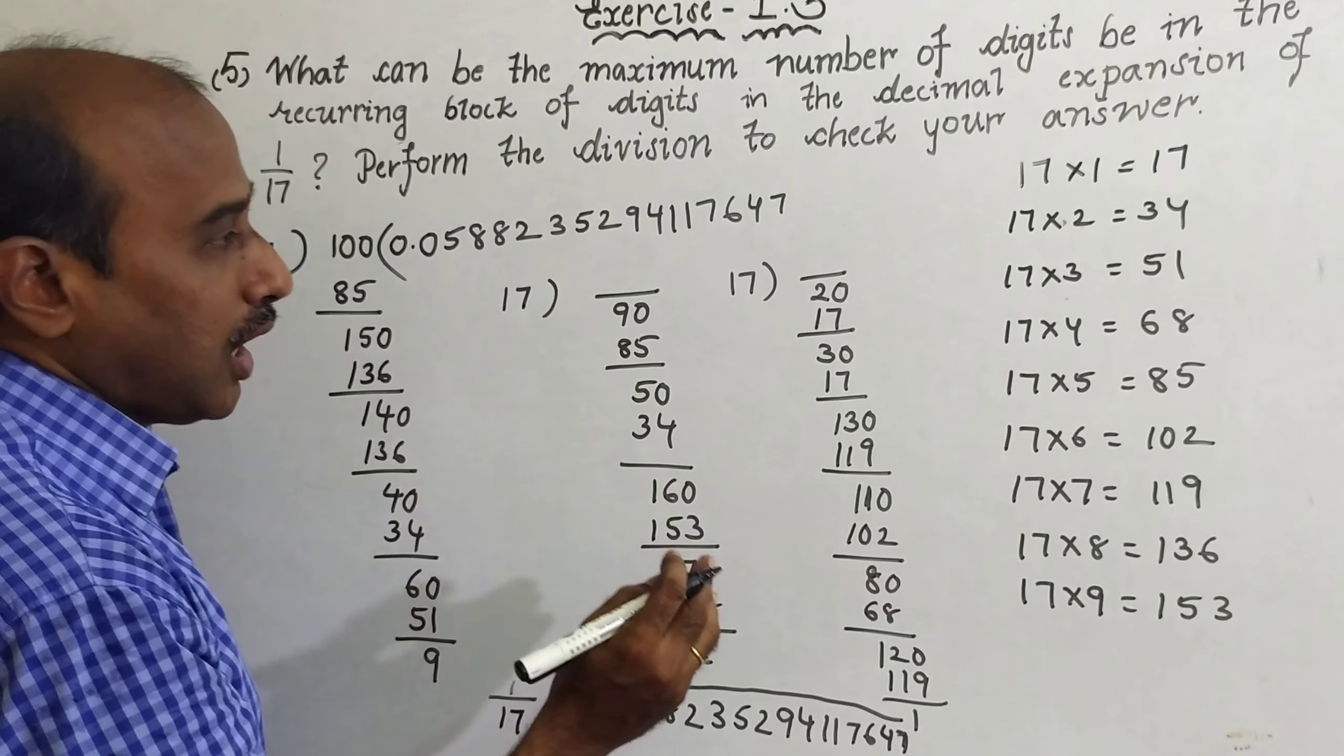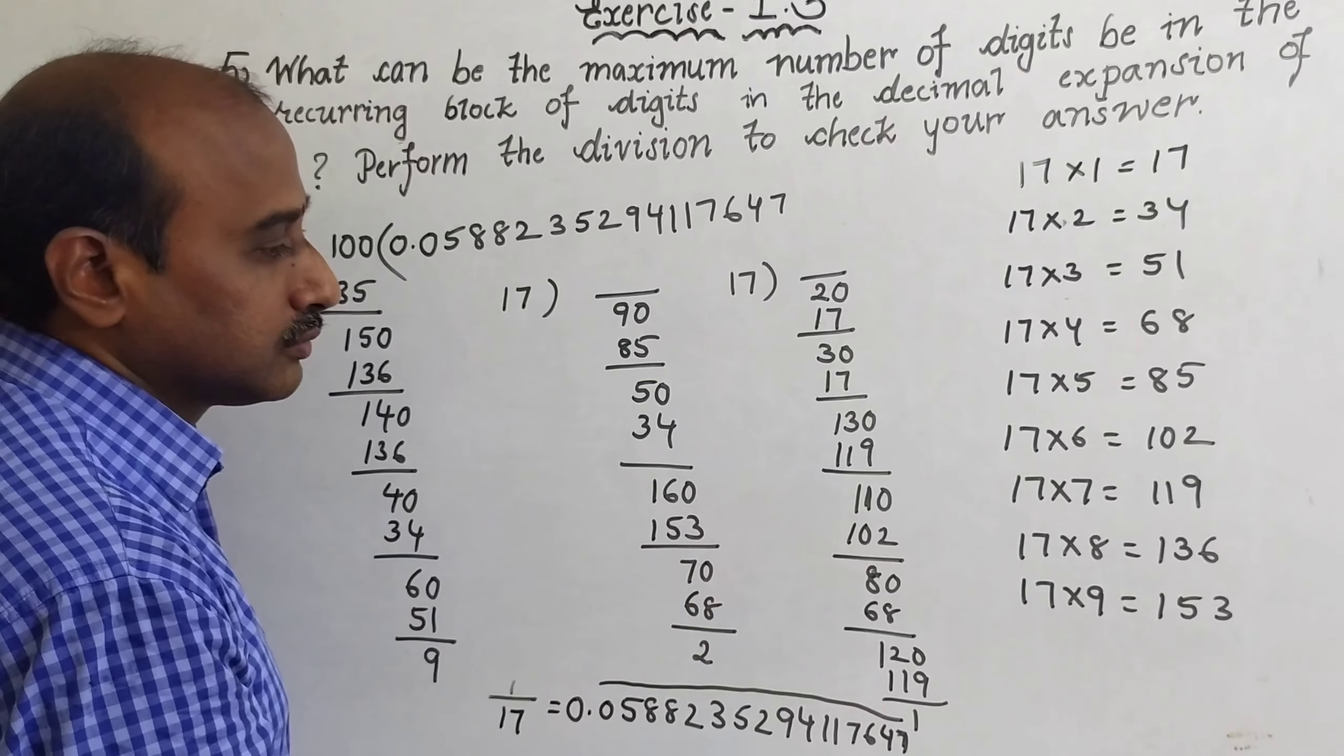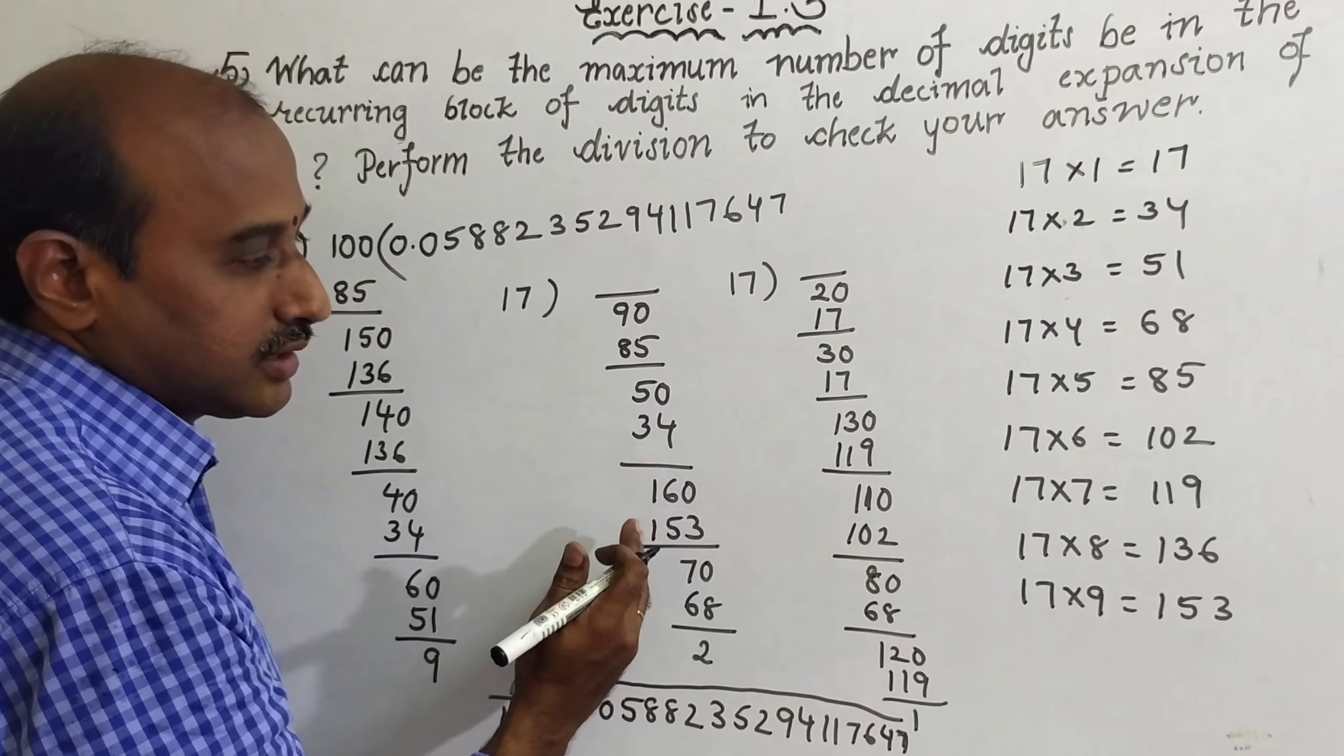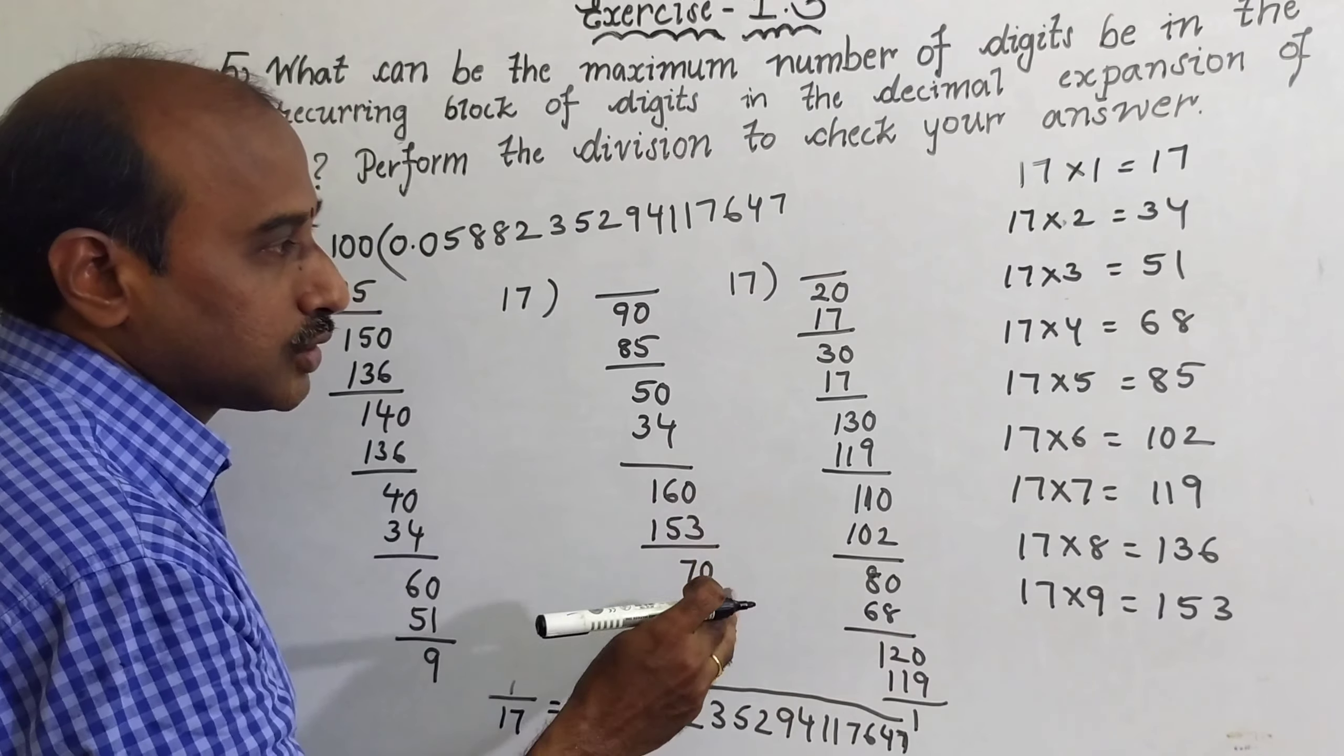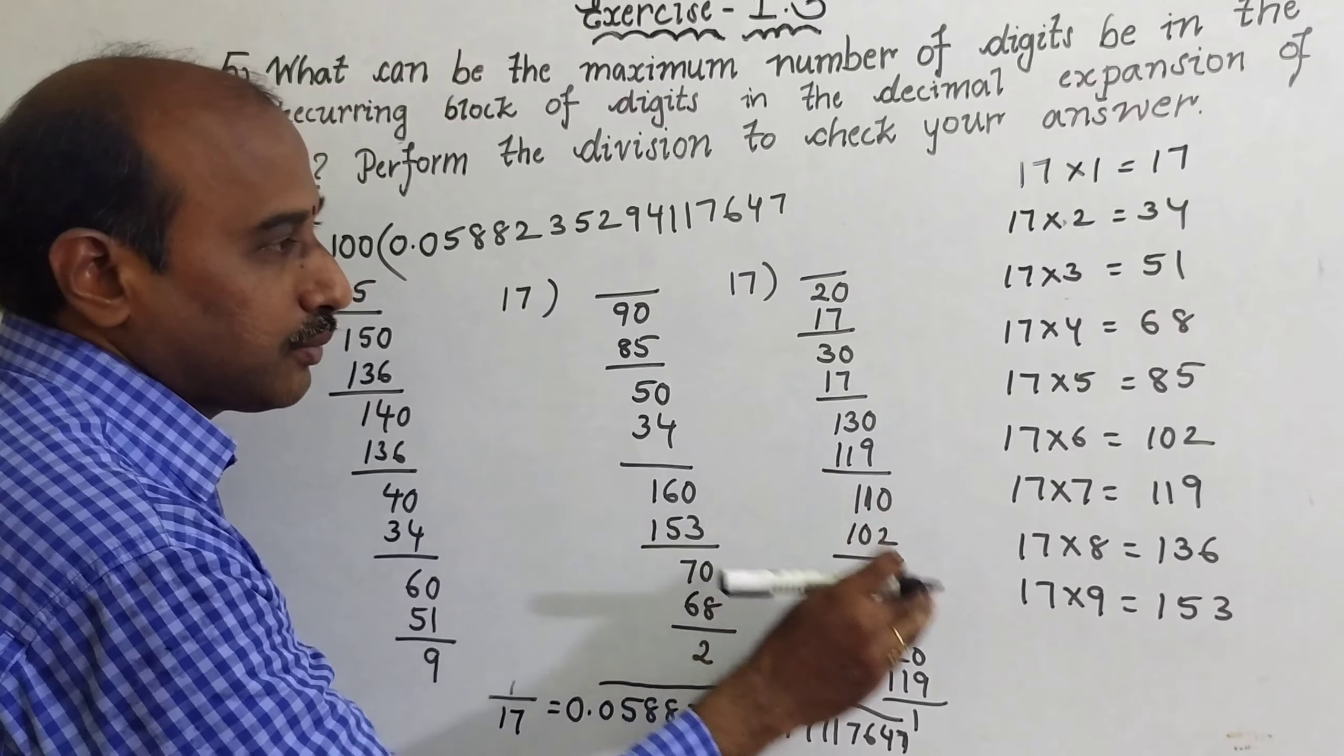So this is the long division, 1 divided by 17. Carefully you should know first itself the table itself. If table you know, it is very easy, otherwise you have to do more calculation. 17 times 5, 17 times 6, like that. So by avoiding this, you do the calculation first, you should know the 17th table.